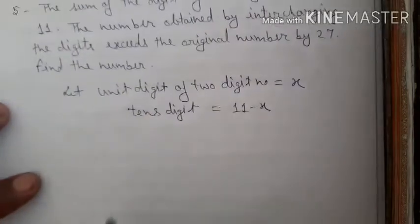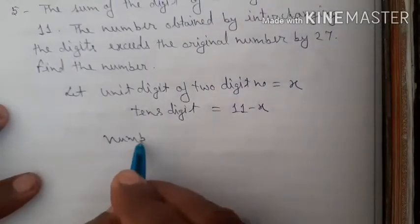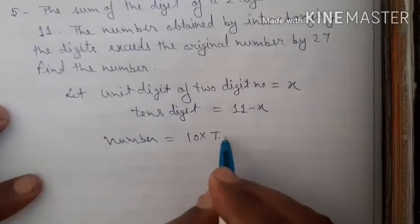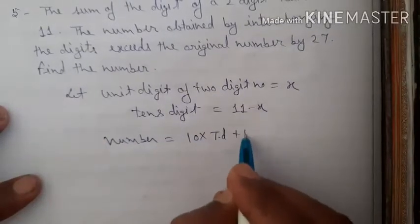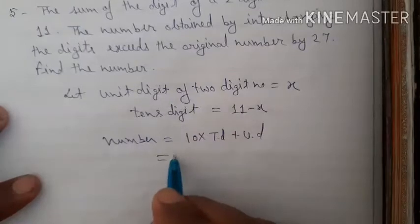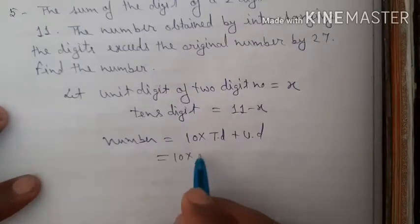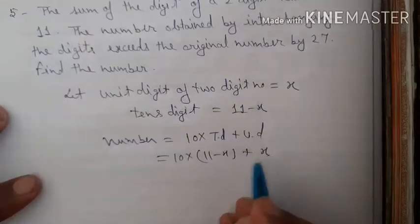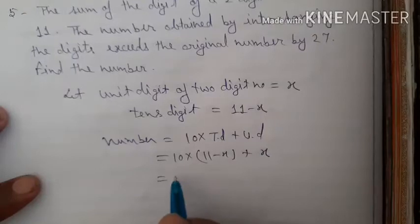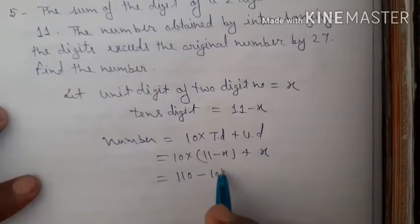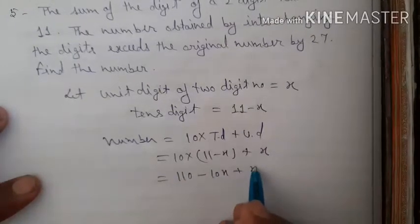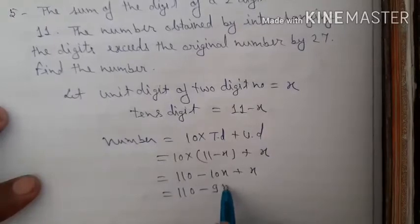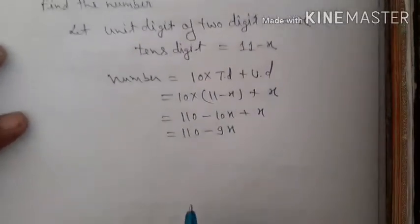Therefore, the number is equal to 10 into tens digit plus units digit. Using this formula: 10 into (11 minus x) plus x, which gives 110 minus 10x plus x, that comes out to 110 minus 9x. This is the original number.